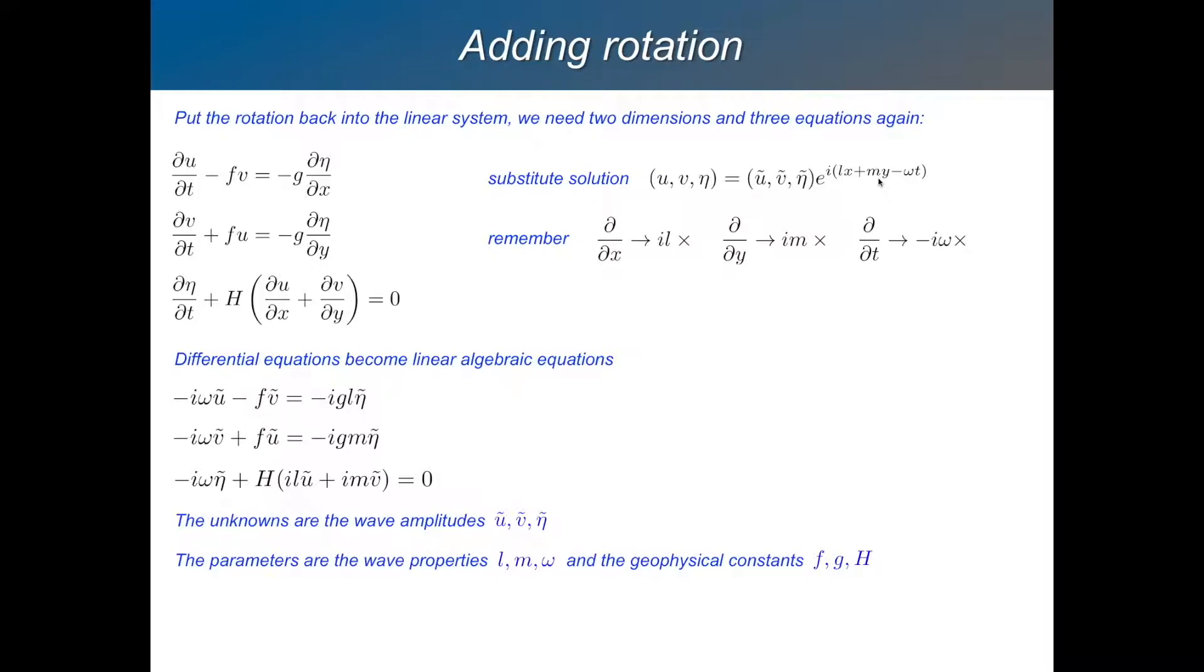And then if you substitute that solution into these three equations separately, then the derivatives become coefficients, right? So D by DX is just I times L. D by DY is I times M, etc. So you can substitute all these derivatives because it's a linear equation and you just get an algebraic set of equations. Three algebraic equations in three unknowns. The three unknowns are the coefficients of amplitude.